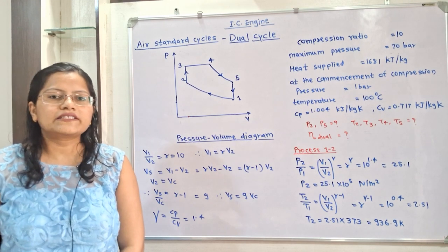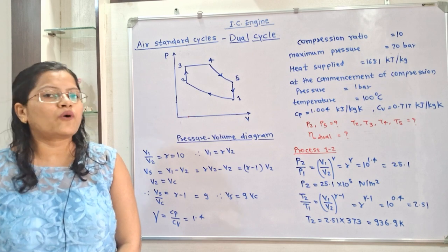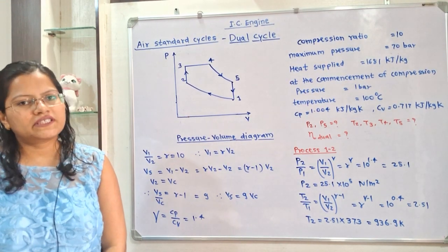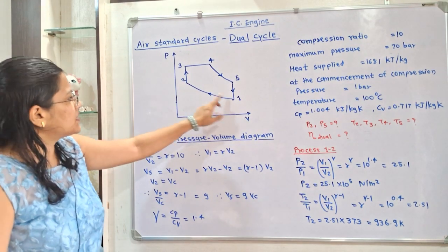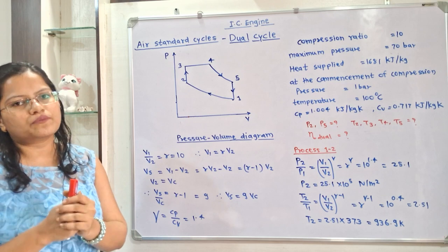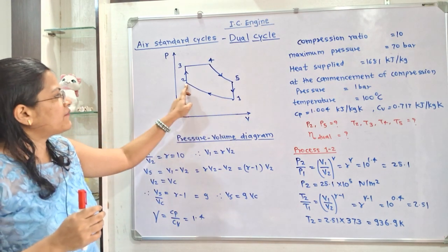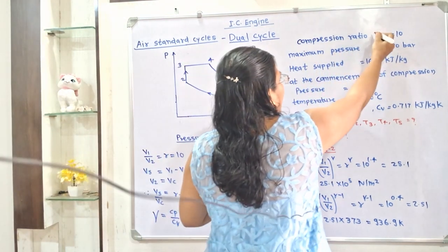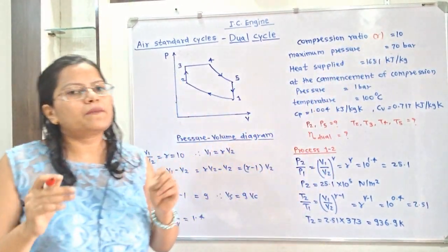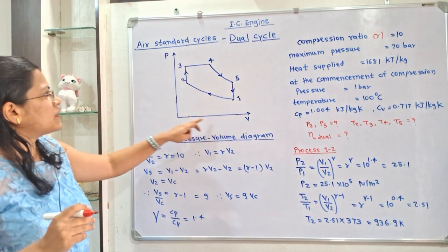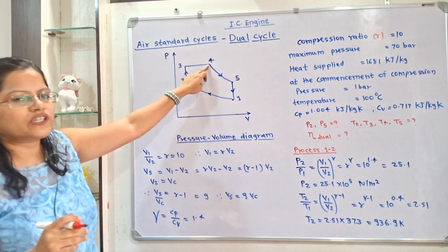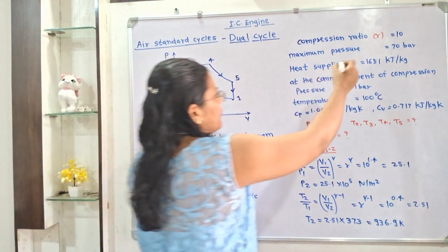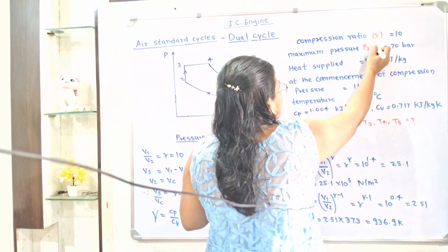Let us understand the given data with the help of the pressure-volume diagram of the dual cycle. The compression ratio is given as R = V1/V2 = 10, which is the ratio for the process 1 to 2. Observing the diagram, the pressure at points 3 and 4 is the maximum pressure, so P3 = P4 = 70 bar.